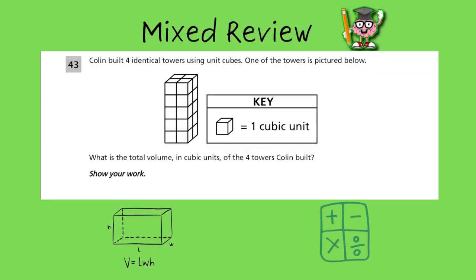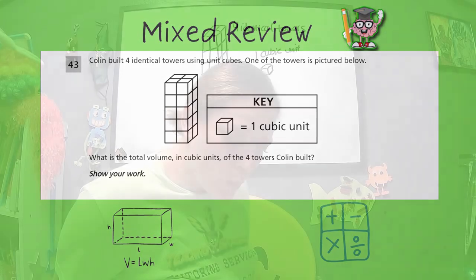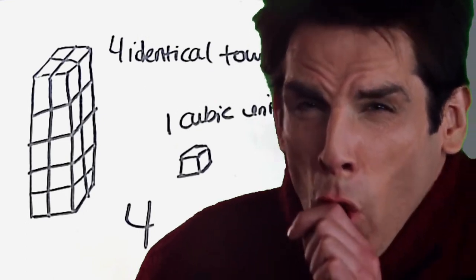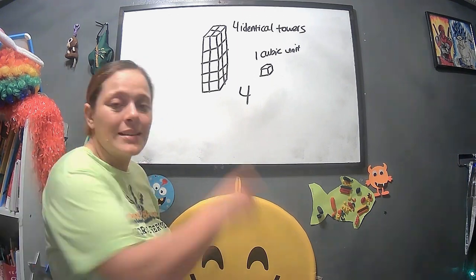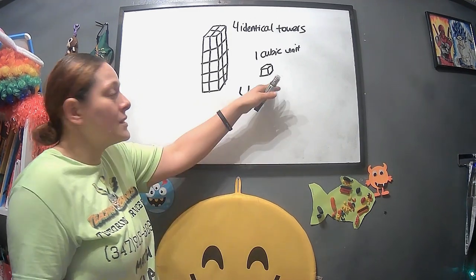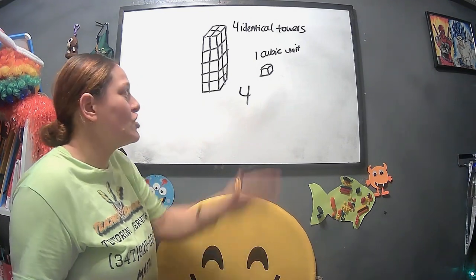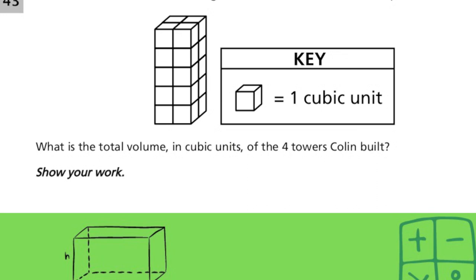Colin built four identical towers using unit cubes. One of the towers is pictured below. Don't make fun of this, okay? So we have this tower. Now it's saying that he did four of these. One of the few things that I want to keep in mind is that, number one, it says this is one cubic unit. That's very important because at any given time, they could change that to two cubic units, and then that changes the answer completely. The second part is, what is the total value in cubic units of the four towers Colin built?